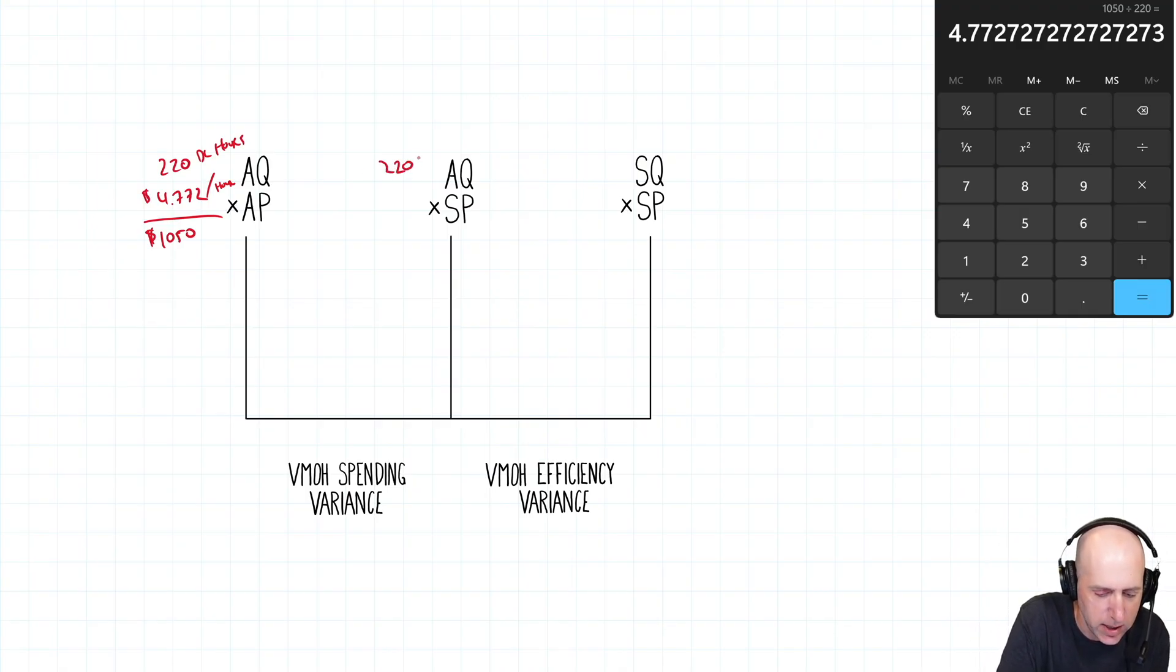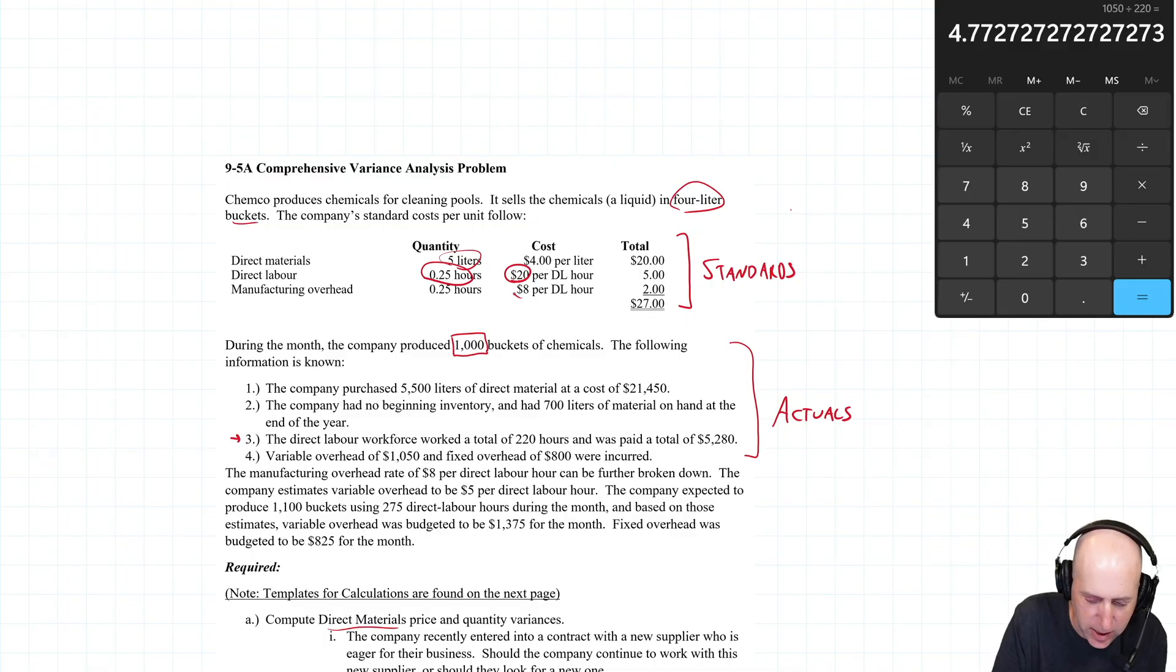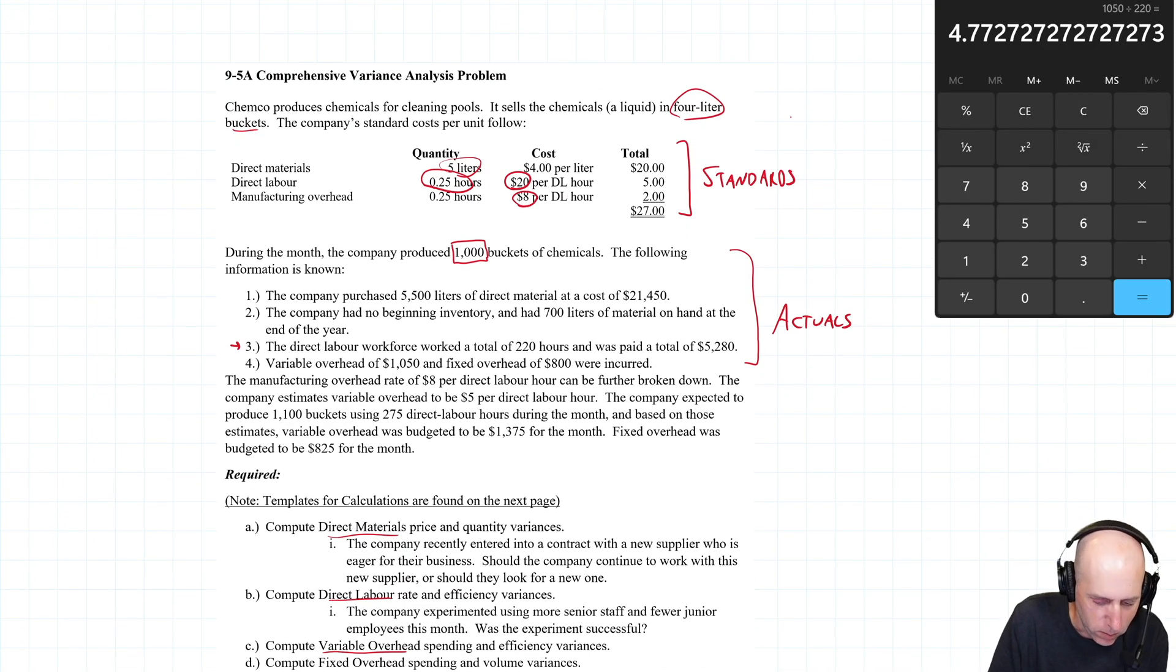So the actual quantity for variable overhead is the actual direct labor hours of 220. So just working backwards, our variable overhead rate per hour, $10.50 divided by 220, 4.77. AQ remains 220 direct labor hours. SP for variable overhead. Well, our SP for overhead is $8 an hour. But wait, we got to break it down into variable overhead per hour and fixed overhead per hour. And it says the manufacturing overhead rate of $8 per direct labor hour can be further broken down. The company estimates variable overhead is 5. And then fixed, therefore, is 3.